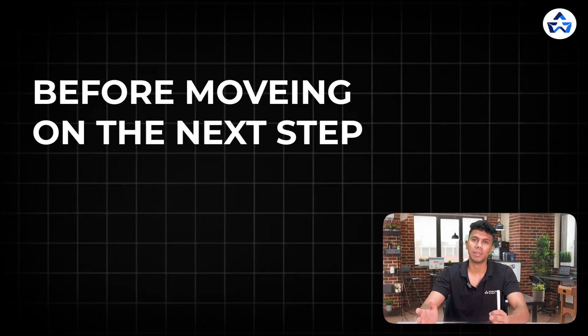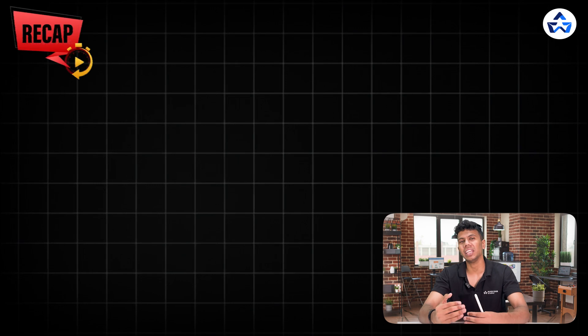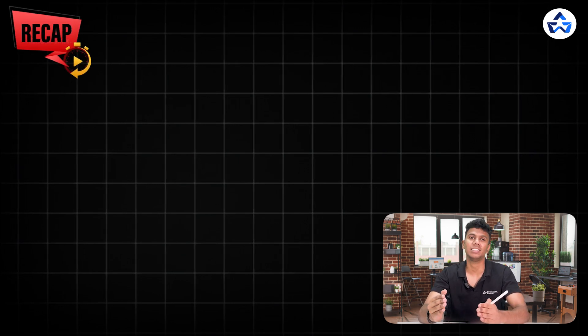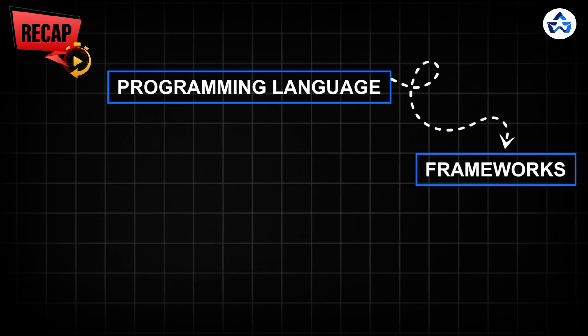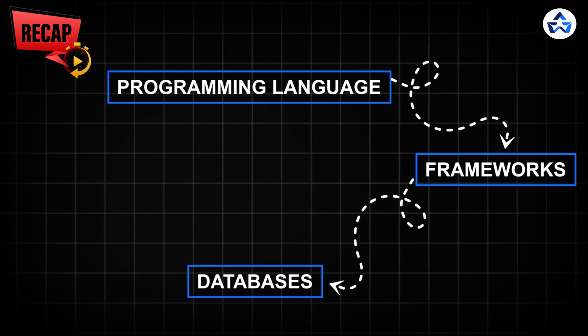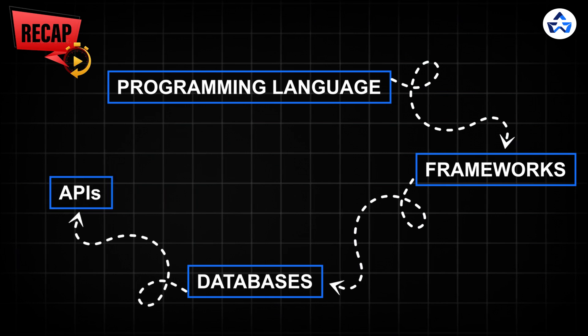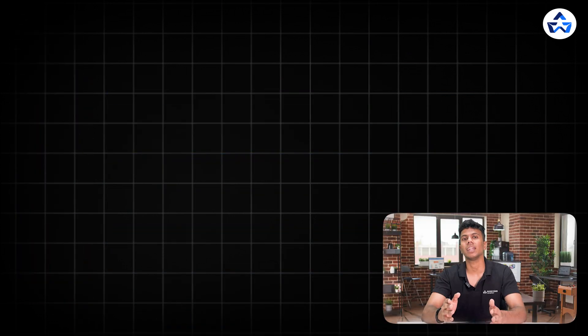Before moving to the next step, let's recap what we've covered so far in the backend roadmap. Step one was programming language — you should be clear about which language to start with. Step two, based on your chosen language, was the framework you should learn. Step three was databases — understanding how databases work and all related concepts. And step four was APIs. Now after APIs, we need to talk about something called data security.